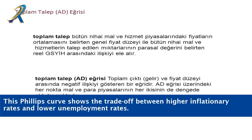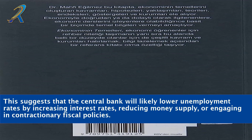This Phillips curve shows the trade-off between higher inflationary rates and lower unemployment rates. This suggests that the central bank will likely lower unemployment rates by increasing interest rates, reducing money supply, or engaging in contractionary fiscal policies.